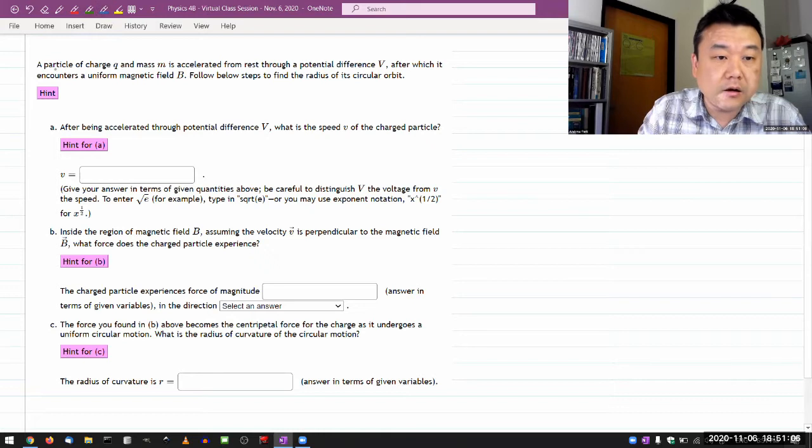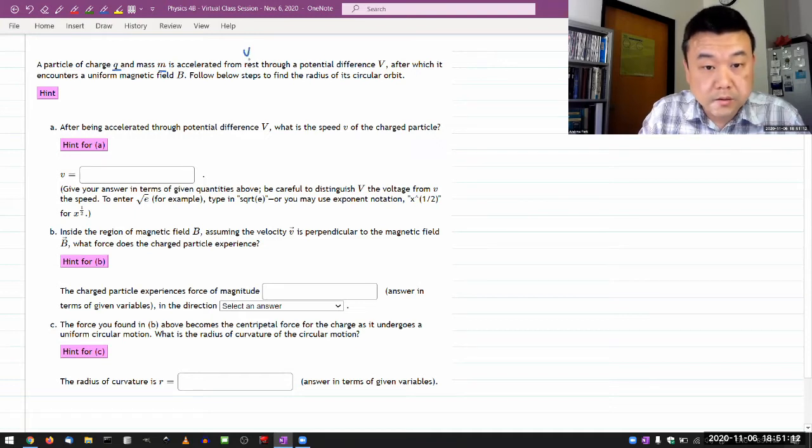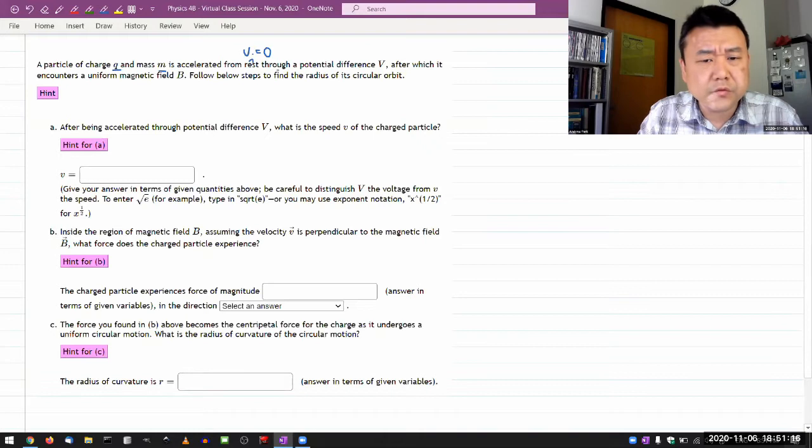It says, particle of charge q and mass m is accelerated from rest. Okay, so initial velocity is zero, that's good. It simplifies things. Probably through a potential difference V, after which it encounters a uniform magnetic field B.